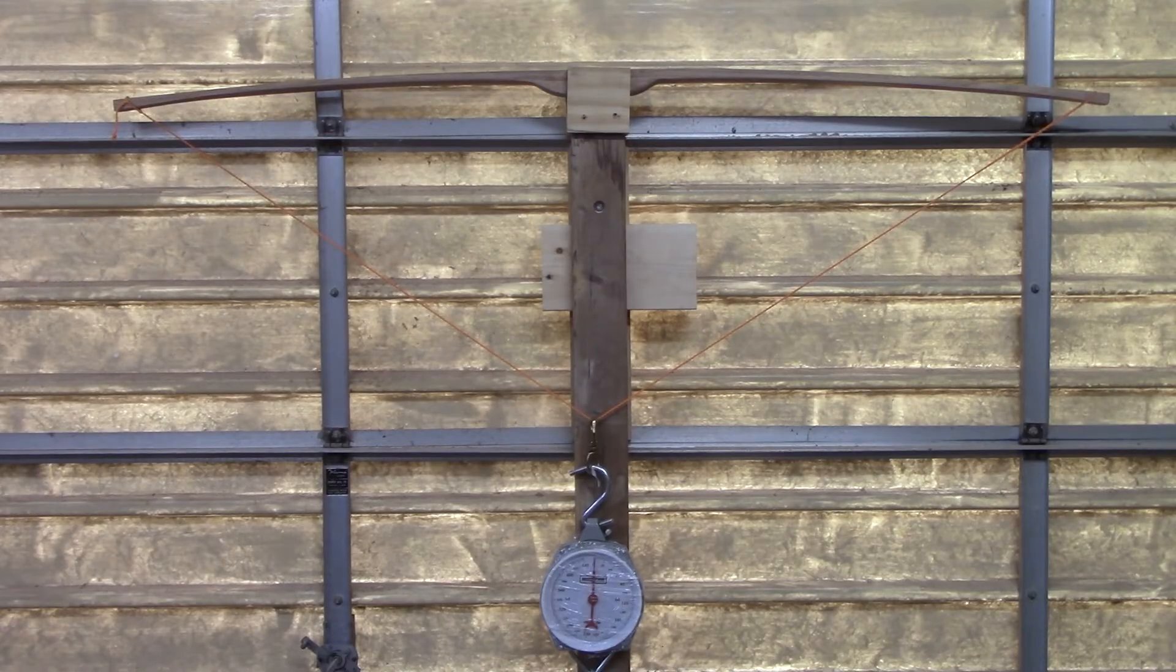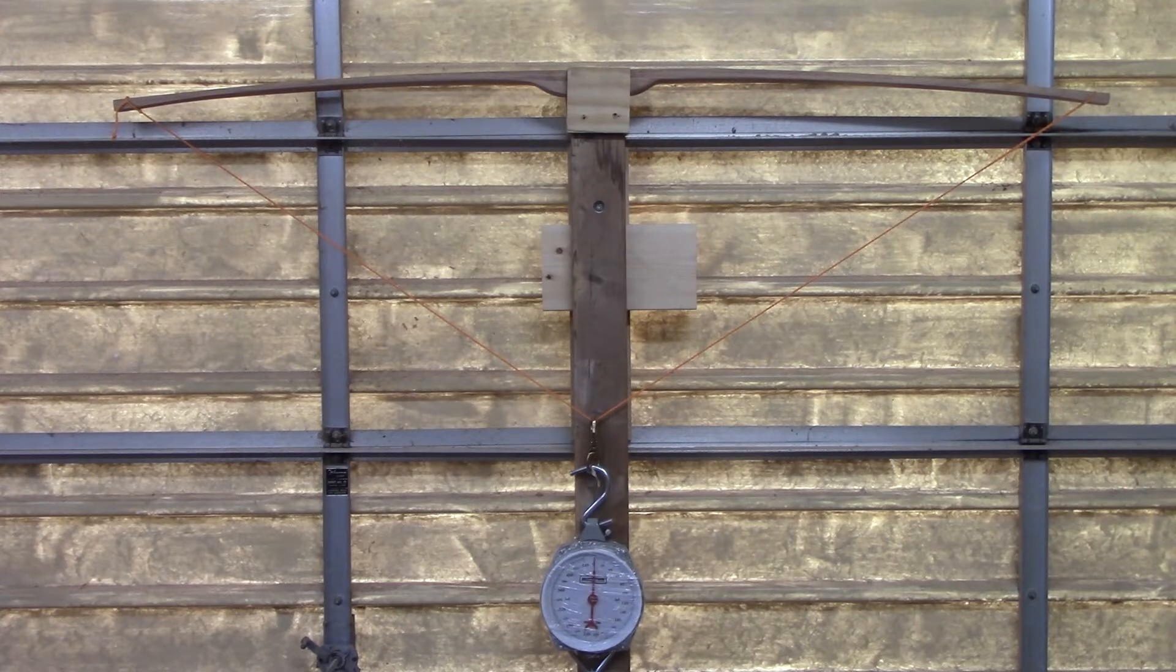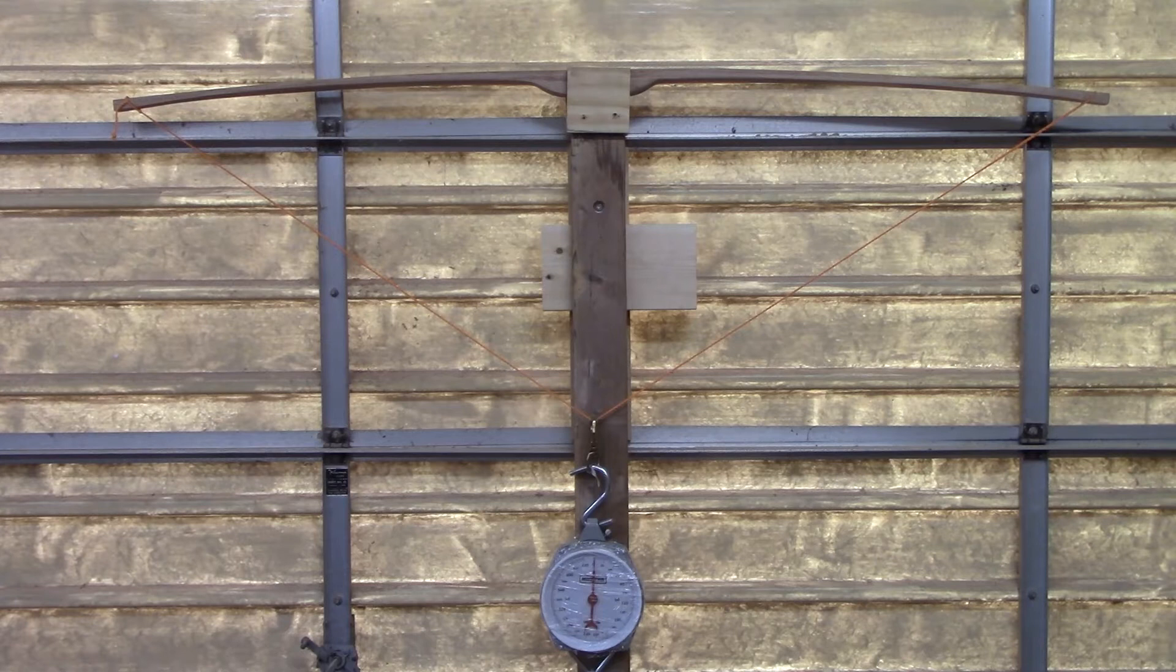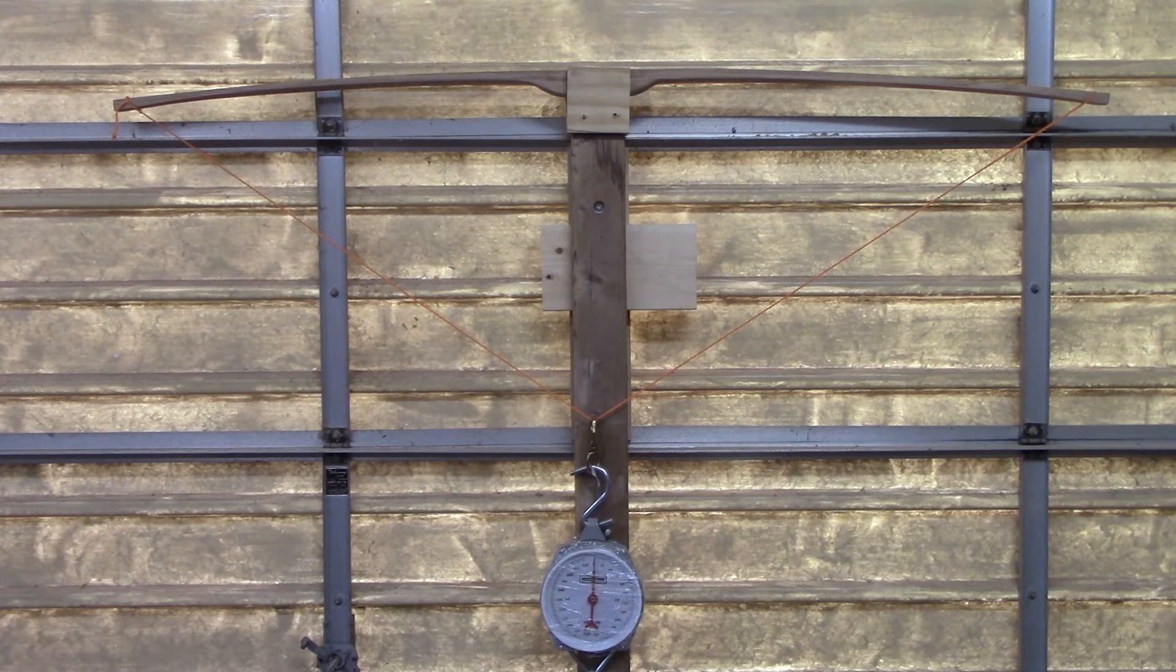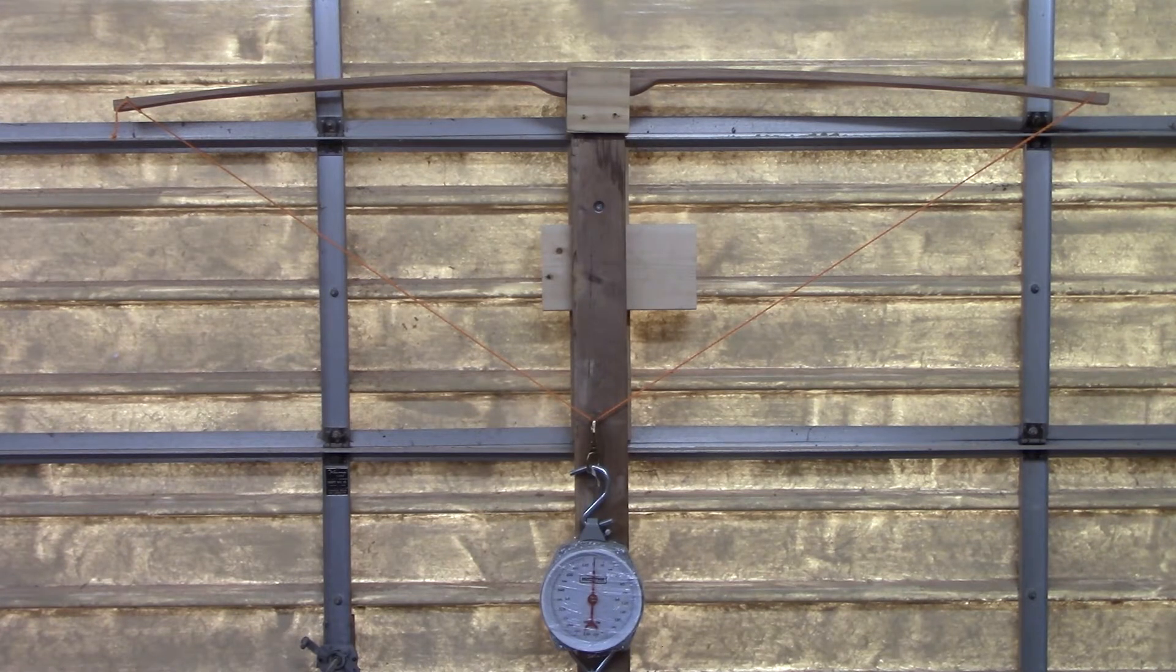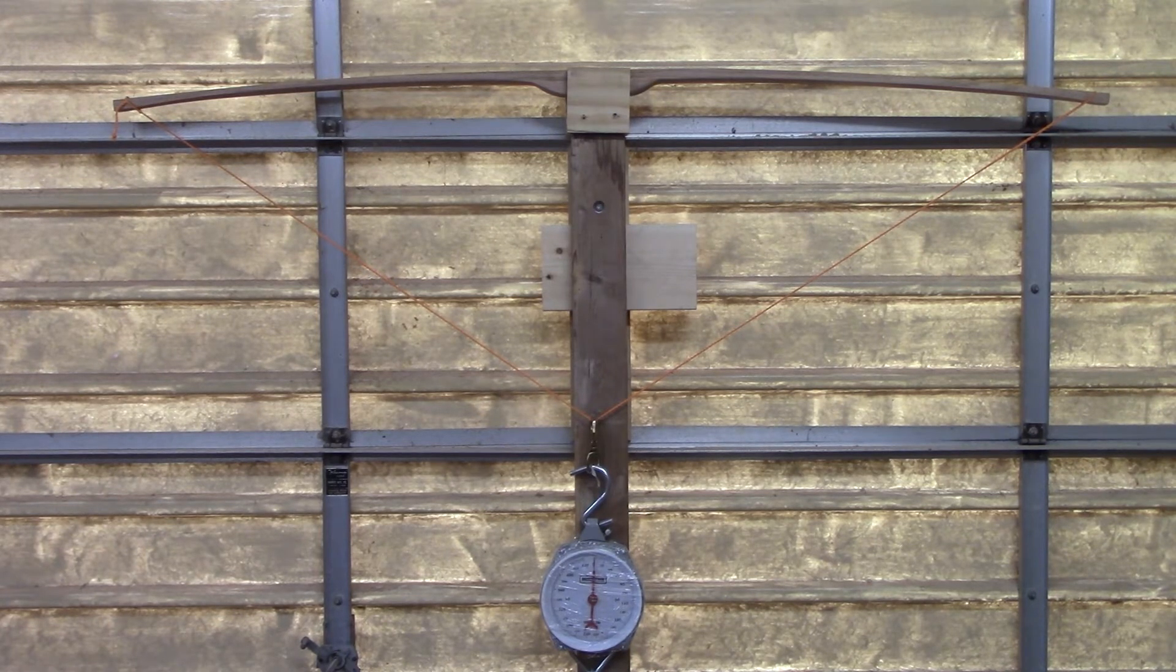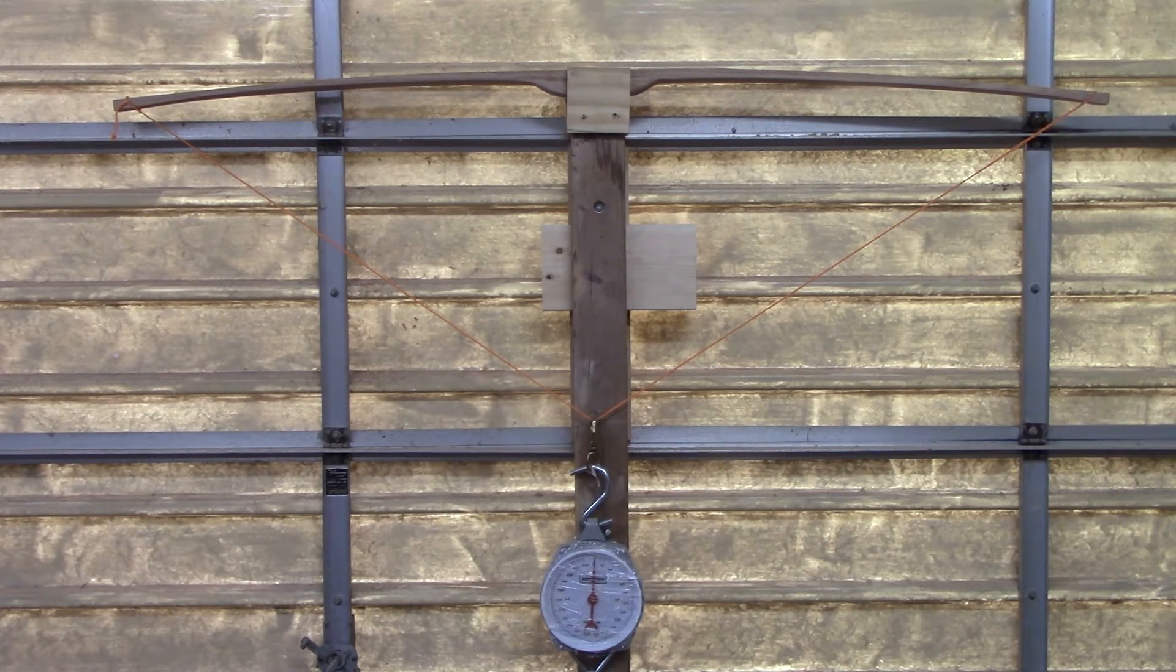All right guys, so now we're to the tillering stage of our bow build process. Now I've already done quite a bit of this off-camera because it's just honestly really time-consuming. And also this is the first bow I've ever made. I don't want to tell you wrong on how to do it. So I'm going to show you the gist of how to do it and I'll let you do a little more research. Now I'm using what's called either a tillering tree or a tillering stick, I'm not sure which one.